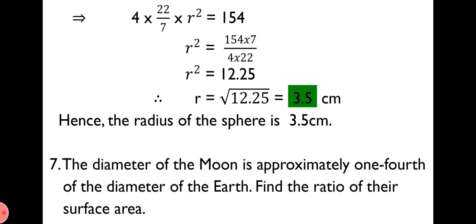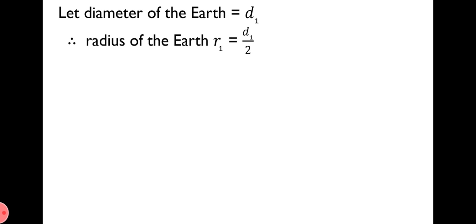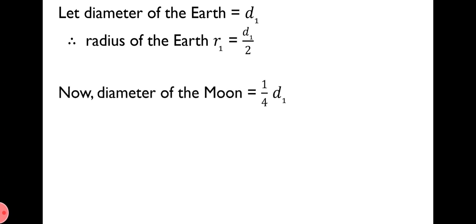Next, question number 7. The diameter of the moon is approximately one-fourth of the diameter of the earth. Find the ratio of their surface areas. Now, the diameter of the moon is given as one-fourth of the diameter of the earth, and we have to find the ratio of the surface area of the earth to the surface area of the moon. For solution, let diameter of the earth = D1. Therefore, radius of the earth R1 = D1/2. It is given that diameter of the moon = (1/4)D1.